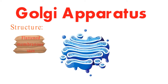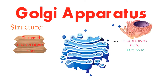There are three main parts we'll explore. The first is the Cis-Golgi network, or CGN. This is the entry point of the Golgi — it receives materials from the endoplasmic reticulum for processing.